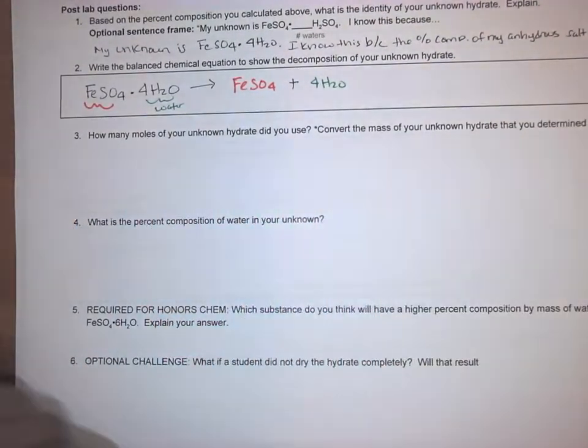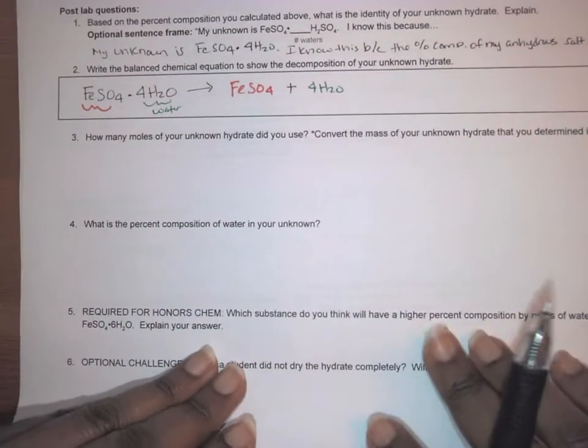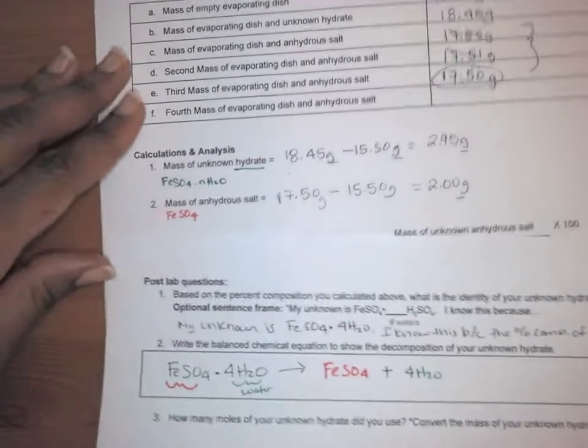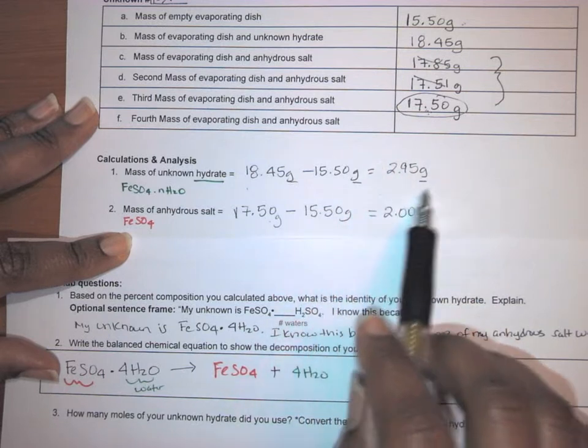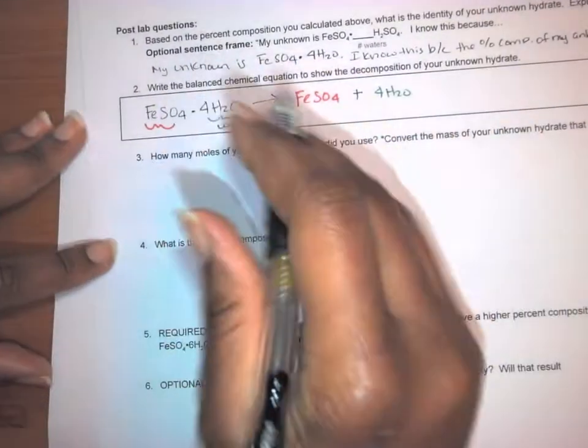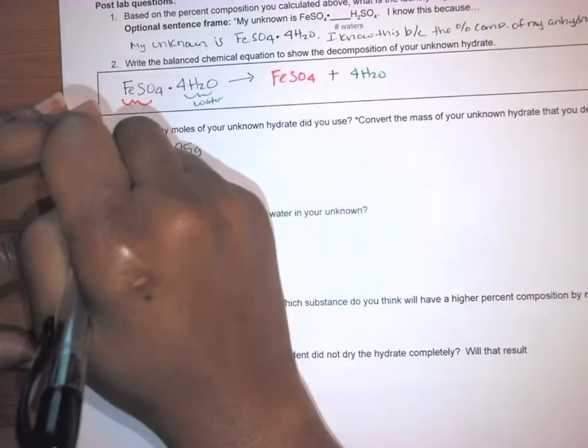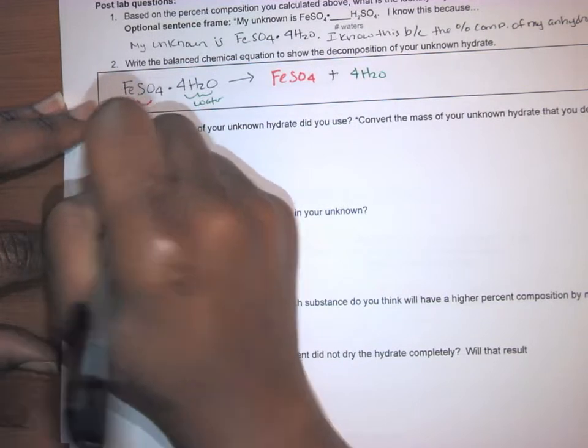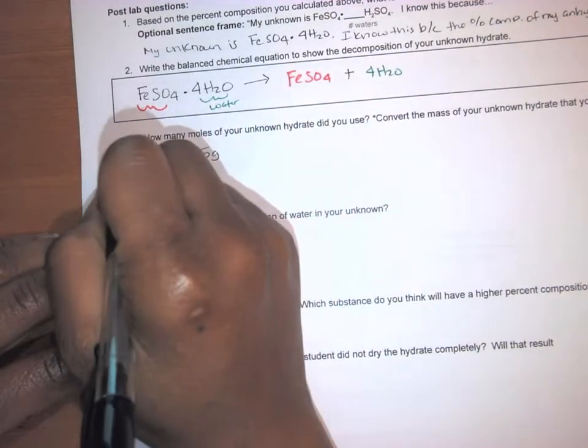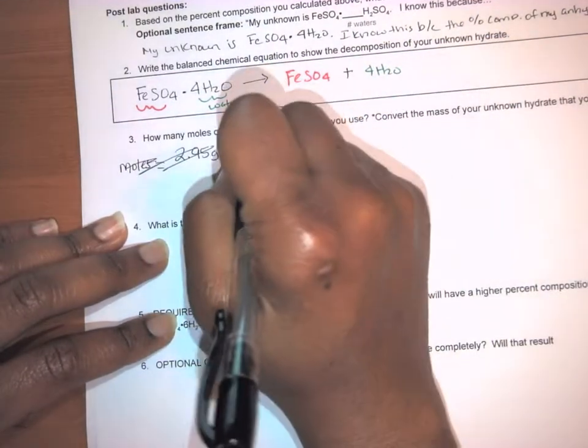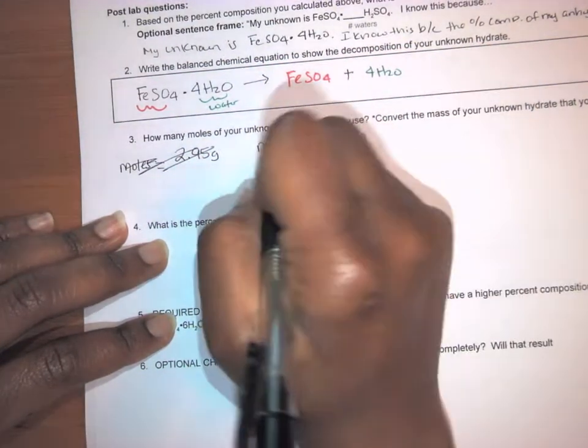Question two, how many moles of your hydrate did you use? So for that problem, what you would do is if you go back to your data, you're going to use the number that you got from calculation one. So the 2.95 grams. So for me, that's what I'm using. Your number should be different from mine, right? So it should not be the same as mine. So moles. That's what I'm trying to solve for. So I know my mass is equal to 2.95 grams, right? That's my given. That's what I'm given. And I'm trying to find my moles.